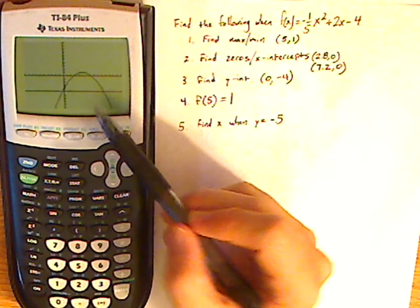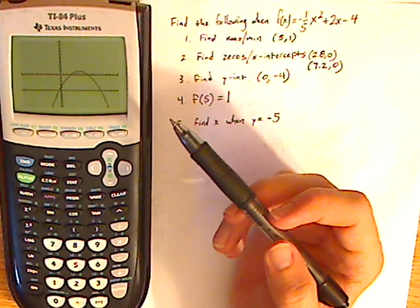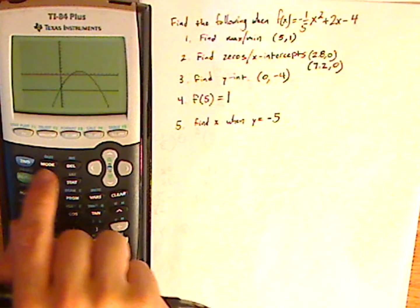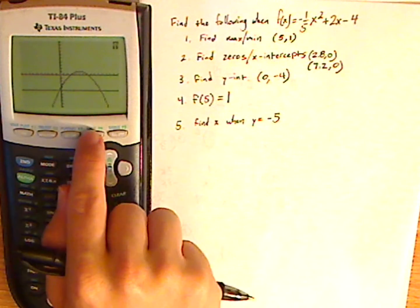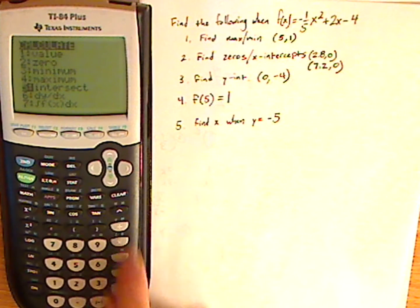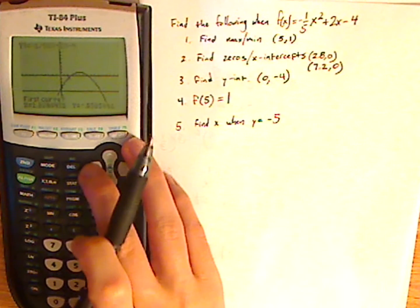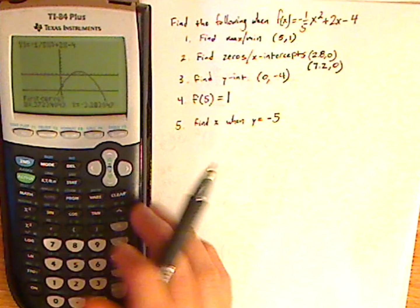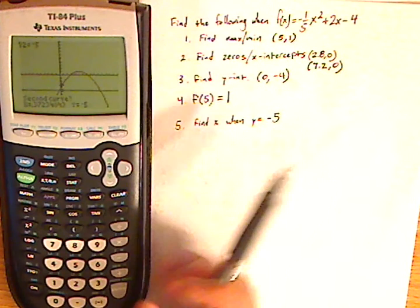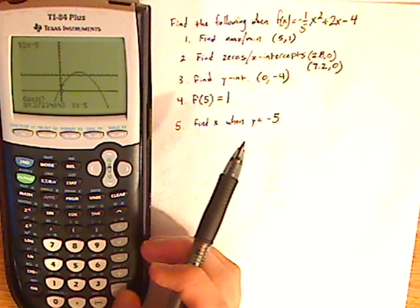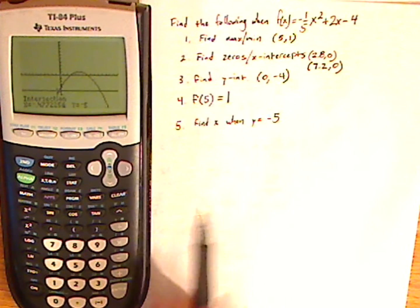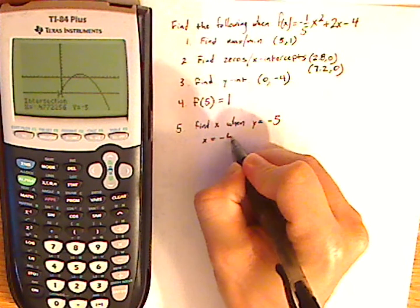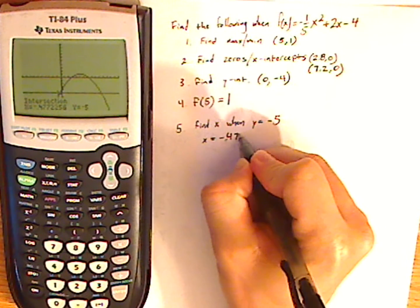Notice I have two intersections now. So I'm going to use the intersection button to find my x's. So do 2nd, calc, intersect. Now, again, I want to get as close to it as possible. So I'm using the arrow keys. And I'll find this one on the left first. So 1st curve, enter. 2nd curve, enter. And then guess. All right, so one possibility is that x equals negative 0.477.